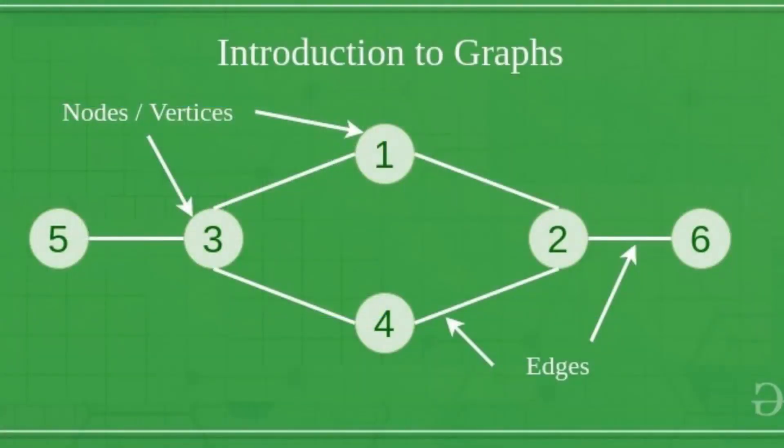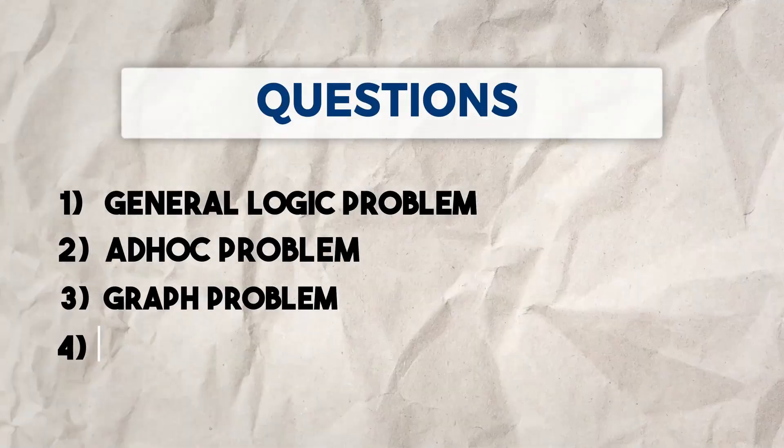The first two questions were ad hoc questions — general logic and printing — they didn't involve any specific DSA or specific algorithm. The next two I remember perfectly: the third question was completely based on graphs, and the fourth question consisted of DP on graphs — that is, dynamic programming on graphs.